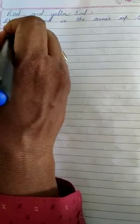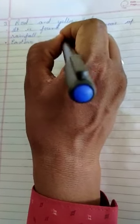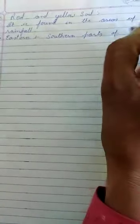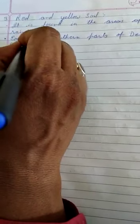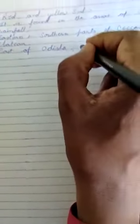Where do we have less rainfall in India? We can say like eastern and southern parts of Deccan plateau. Then we have some parts of Odisha, Chhattisgarh.